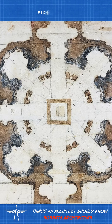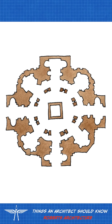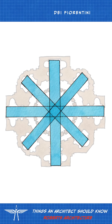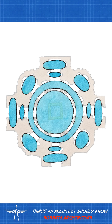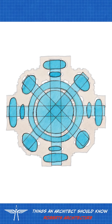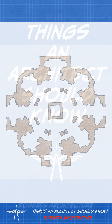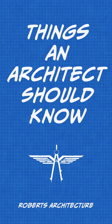Michelangelo's design of San Giovanni dei Fiorentini uses dynamic symmetry, applying axes against regular geometric shapes. This implies movement and disrupts the stability of a circle or square. By the superimposition of two pairs of cross axes, dynamic movement is established. There is tension between equal and opposing forces.